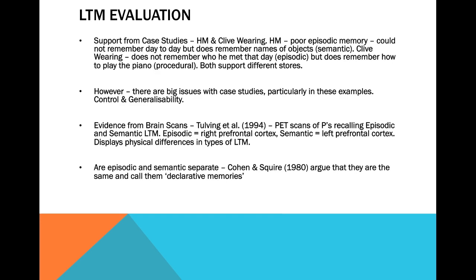HM had his corpus callosum cut — the part that holds the two hemispheres of the brain together — and had memory issues because of it. What they found was that HM had poor episodic memory: he didn't know the timeline of his life, didn't know what he had for lunch or what happened the evening before. But he did have semantic memory — he could remember objects, knew what a chair was, because he had learned it a long time ago. So it's not as though his whole long-term memory had gone; parts had and other parts hadn't. HM backs up the idea that there are separate types of long-term memory.